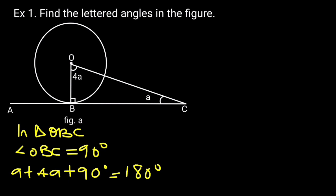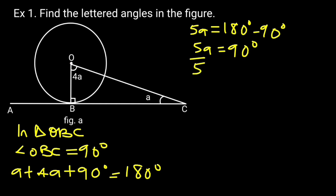Collecting like terms: A plus 4A is 5A. So 5A is equal to 180 degrees minus 90 degrees, which gives 5A equal to 90 degrees. Dividing through by 5, A is equal to 18 degrees.